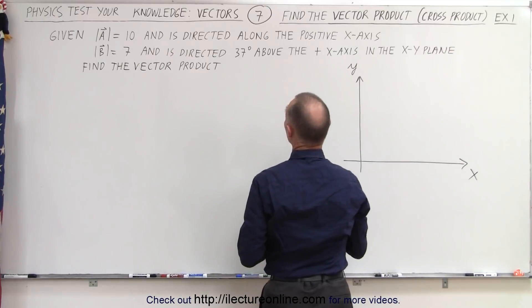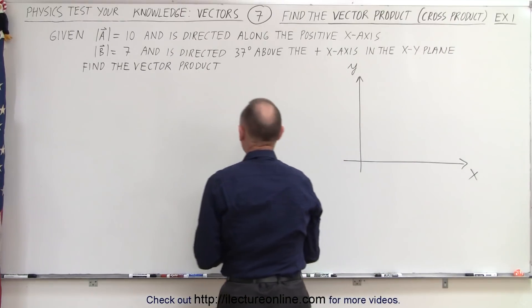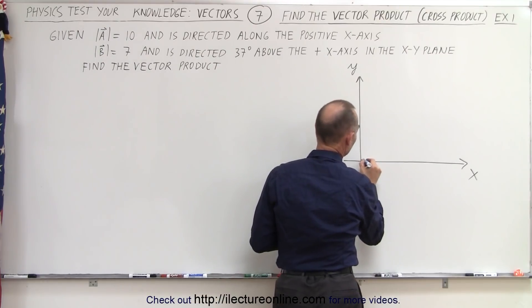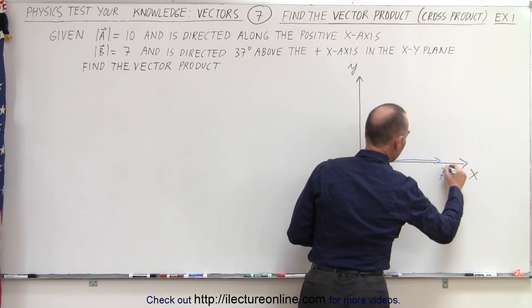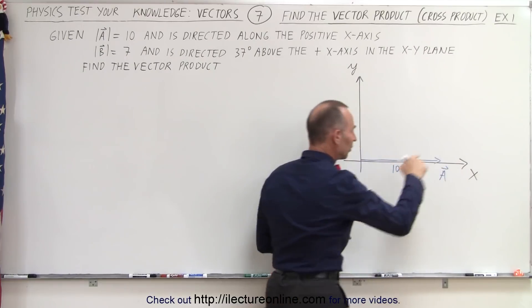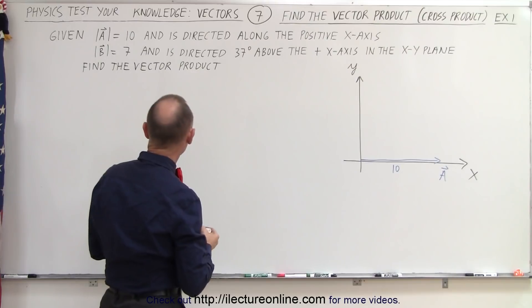Our first vector is directed along the positive x-axis, so we'll use a different color, and has a magnitude of 10. So here is our vector A, with a magnitude of 10 directed along the positive x-axis.